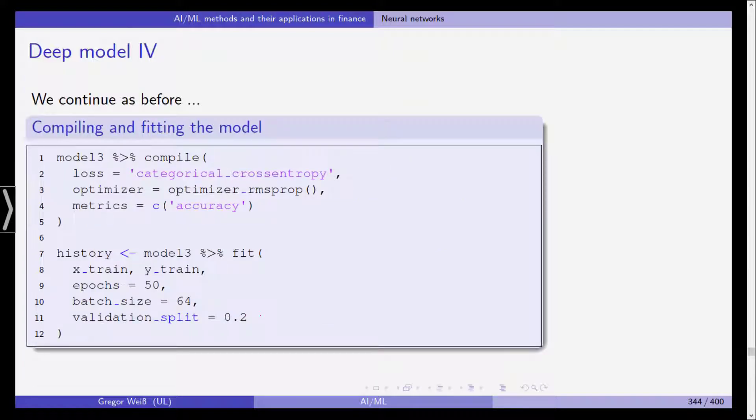We continue as before we compile and fit the model again using cross entropy and accuracy, 50 epochs, batch size of 64 and we use 80% for training and 20% of our available data for validation.